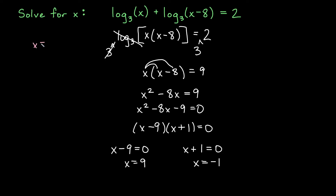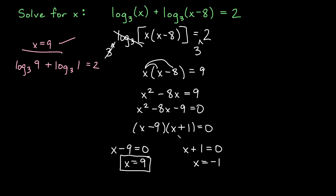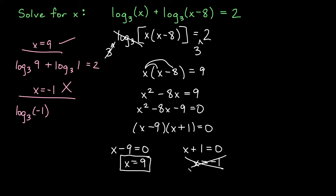Checking x equals 9 in the original: log base 3 of 9 plus log base 3 of (9 minus 8), which is log base 3 of positive 1 — we're taking logs of positives, so x equals 9 is a good answer. Checking x equals negative 1: log base 3 of negative 1 right away violates the rules of logarithms. So x equals negative 1 is not valid, and x equals 9 is our only solution.